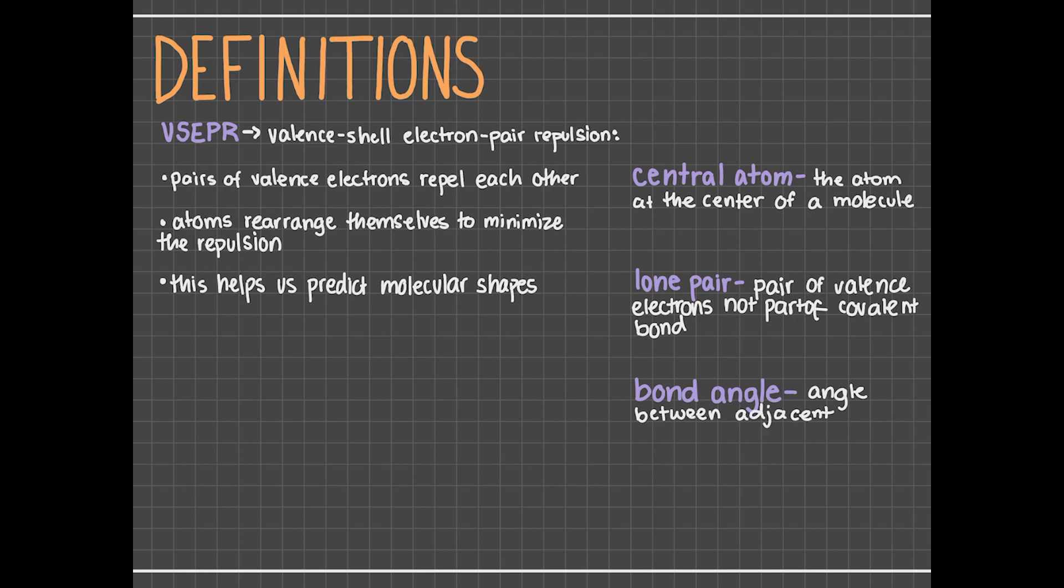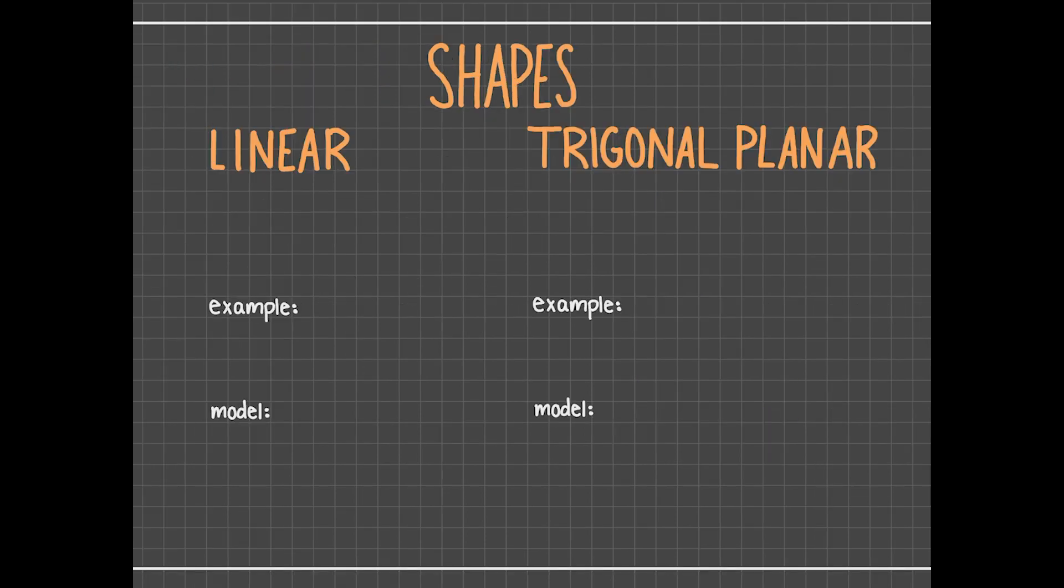Now that you're familiar with these terms, let's get into the structures we can predict with VSEPR. Molecules may have a linear shape. These molecules have two atoms bonded to the central atom and zero lone pairs on the central atom. For example, if we look at the Lewis dot structure of carbon dioxide, we can see that there are two oxygens bonded to the carbon and no lone pairs on the carbon, so CO2 is a linear molecule. Linear means straight, so these molecules are in the shape of a straight line and form a 180-degree bond angle.